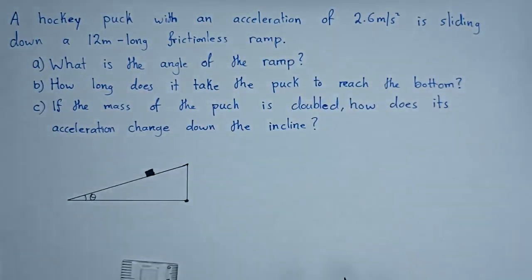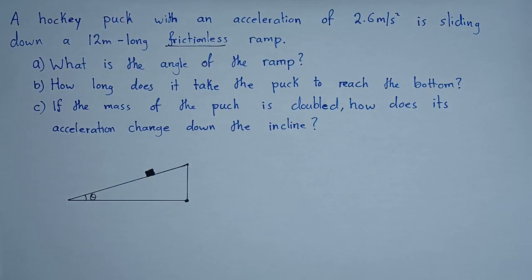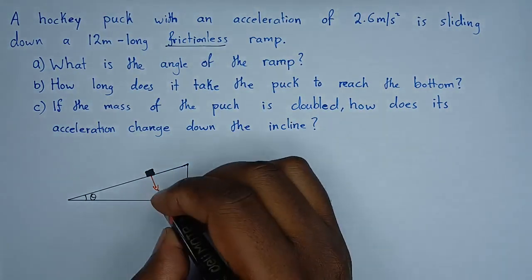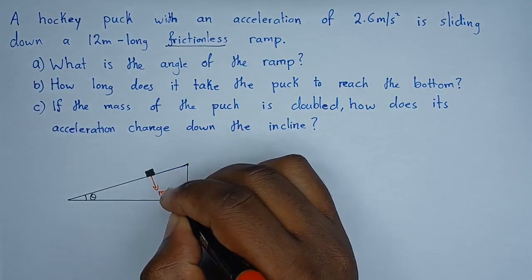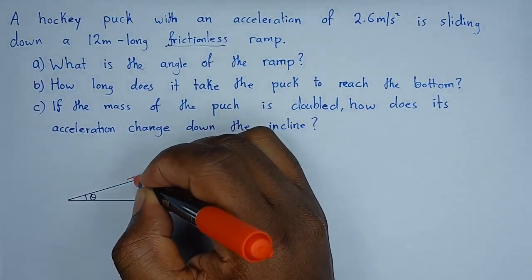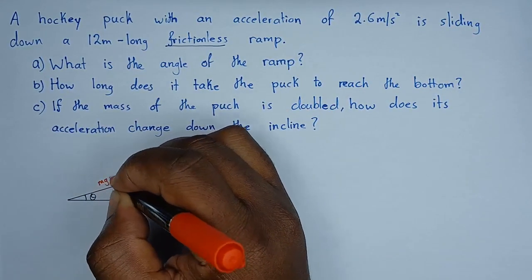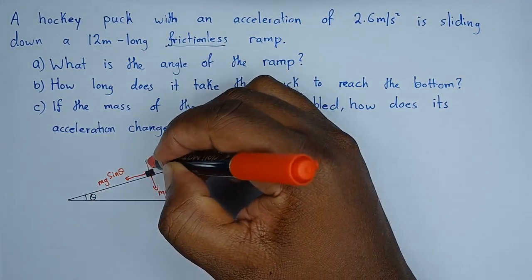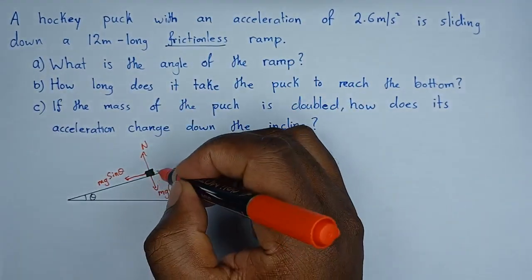So it's frictionless, meaning that there is no friction acting on this object. Okay, so given this information now, let's see the forces acting on this puck. Number one, we have the two components of weight, which is mg cos theta, as well as mg sin theta, in that direction. Then we have the normal force, like that.